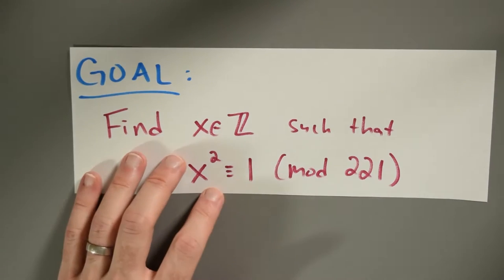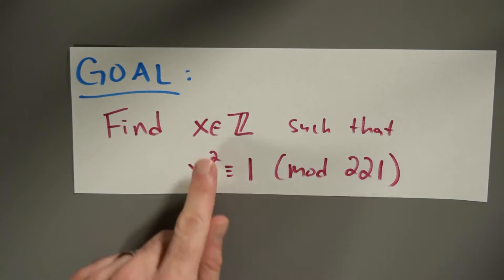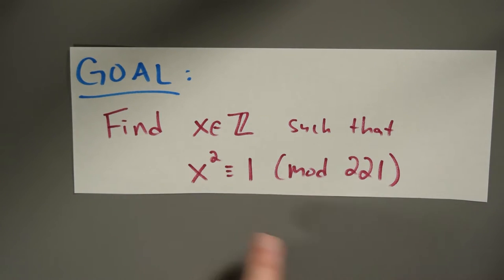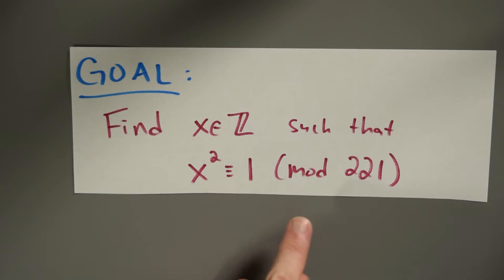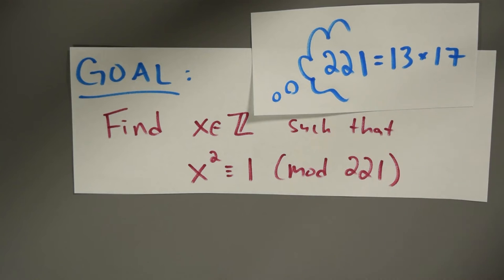Our specific goal is to find all the integers x so that x squared is congruent to 1 modulo 221. And if it's not immediately obvious, 221 is 13 times 17.